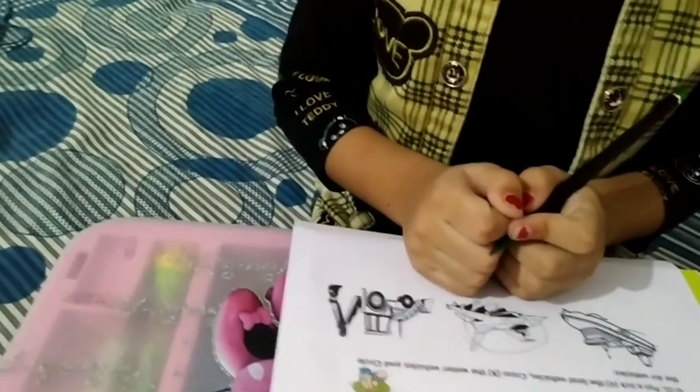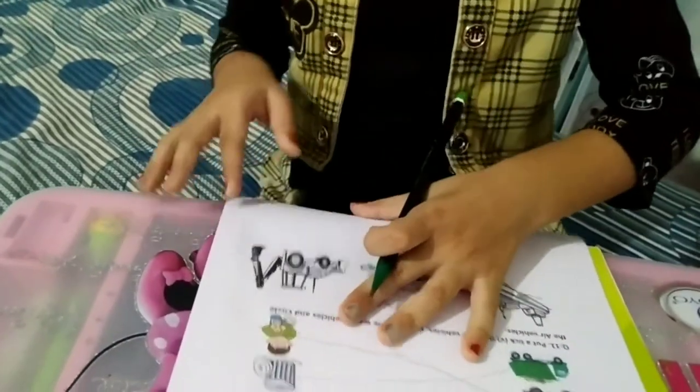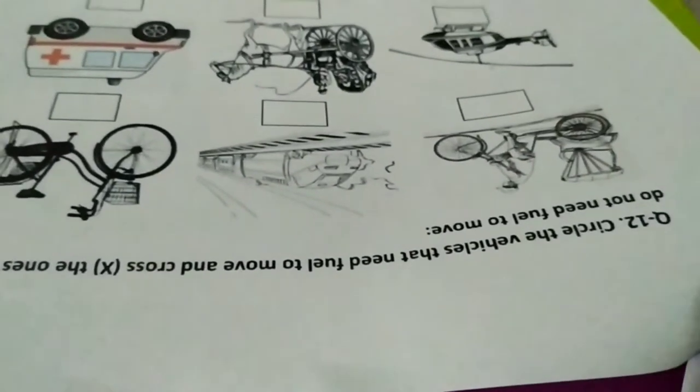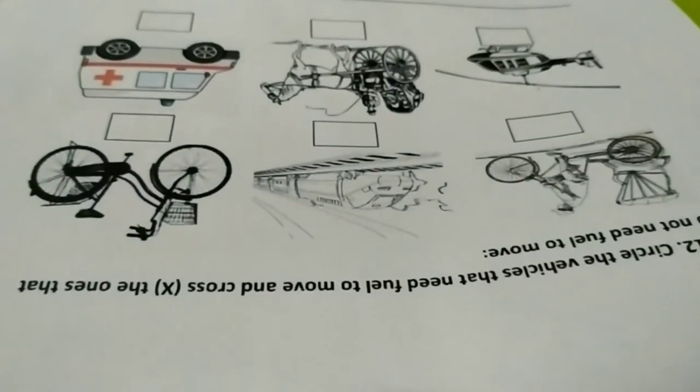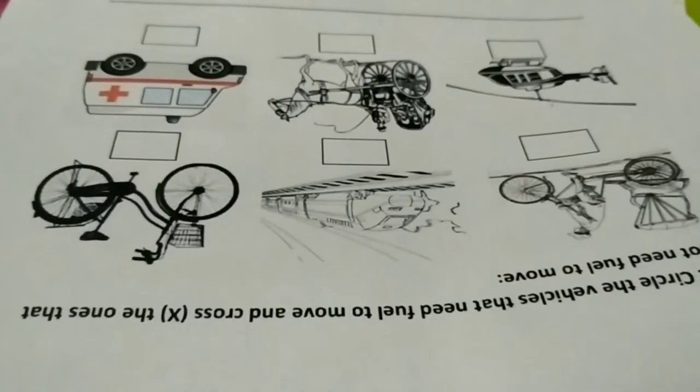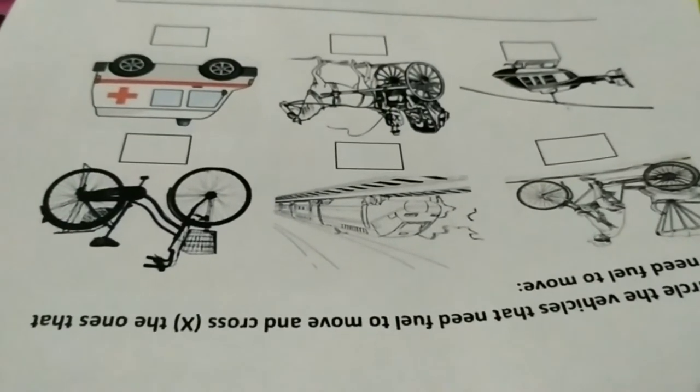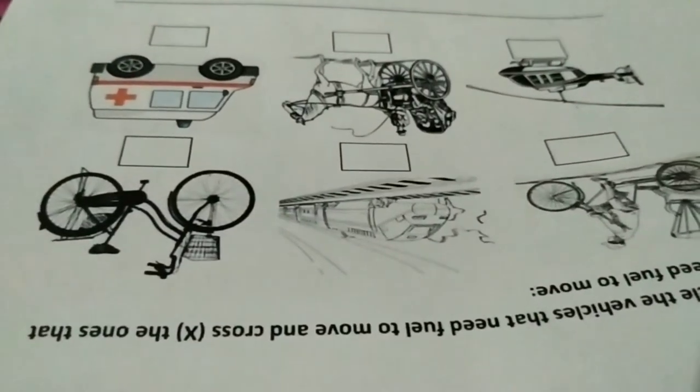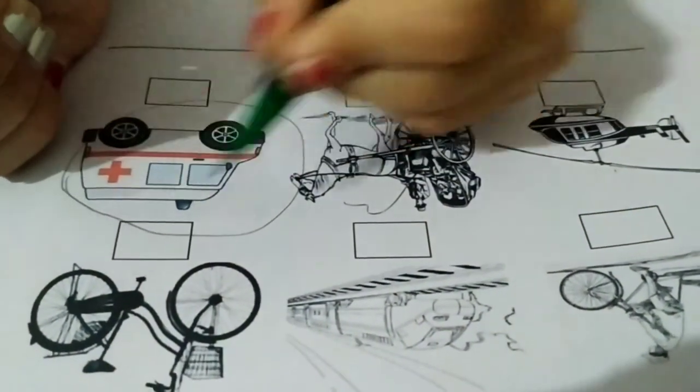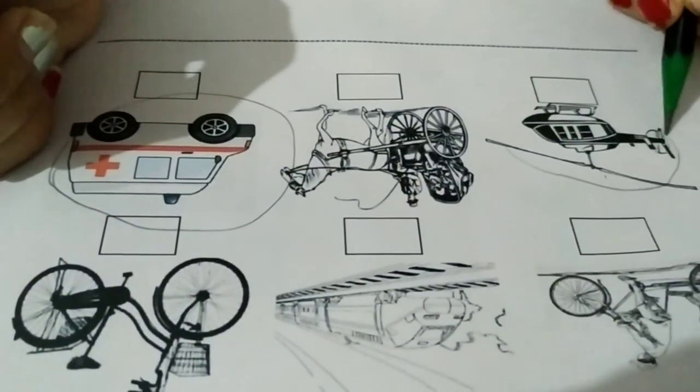Question 12. Circle the vehicles that need fuel to move and cross the ones that do not need fuel to move.